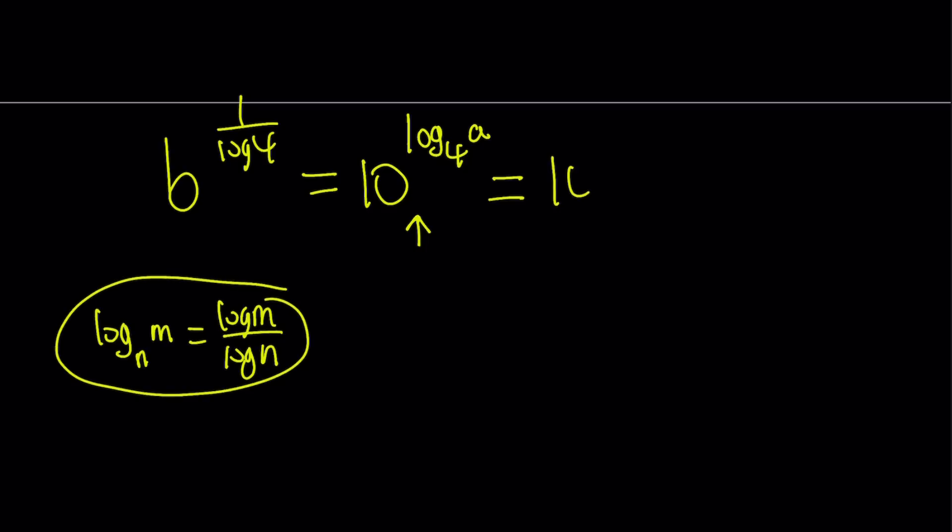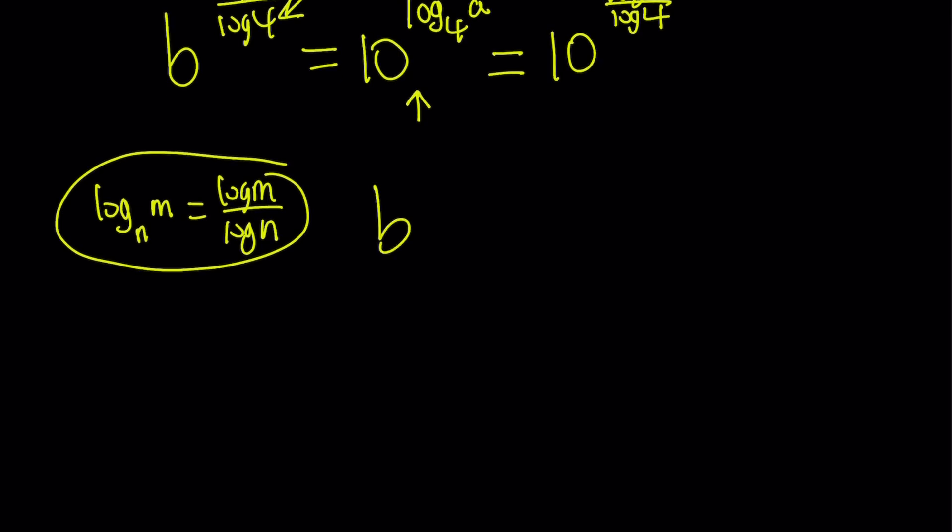So I can go ahead and write this as log 10 to the power log a over log 4. Here I want to use base 10 because notice that this is also in base 10. So let's rewrite it. b to the power 1 over log 4 equals 10 to the power log a over log 4. Do you see what I see? Both of these expressions have the same denominator in their exponents.